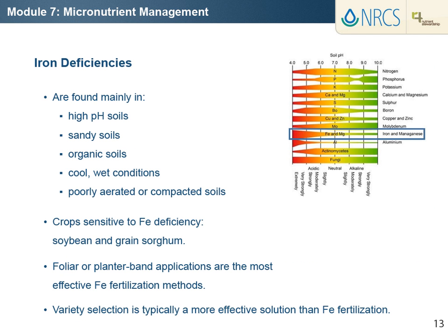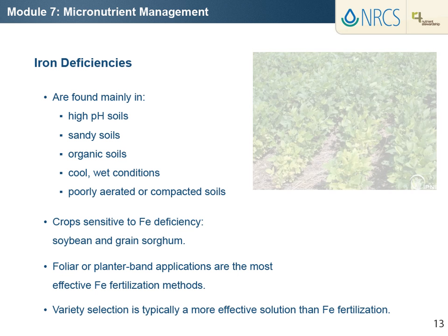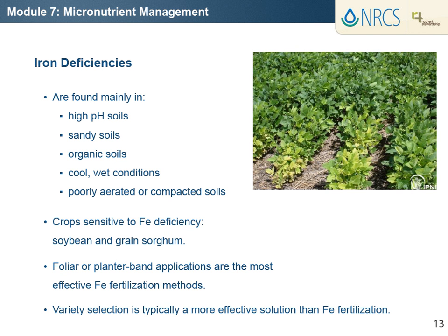Iron deficiencies are found mainly in crops grown in sandy soils, in organic soils, and in high pH soils, usually above pH 7.2 and with free carbonates, which reduces iron solubility. Cool wet soil conditions enhance iron deficiency, especially in soils with marginal levels of available iron. Poorly aerated or compacted soils also reduce iron uptake by plants. Uptake of iron is adversely affected by very high levels of available phosphorus, manganese, and zinc in soils, and in soybean iron chlorosis is aggravated by high concentrations of soil nitrate. Development of iron chlorosis is quite variable due to the many soil, climatic, and plant interactions related to deficiency.